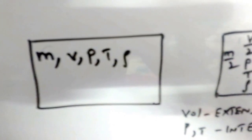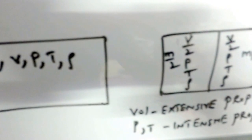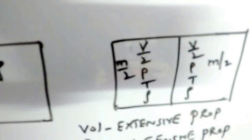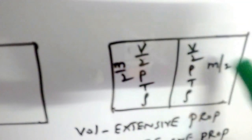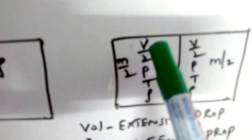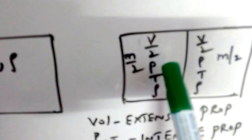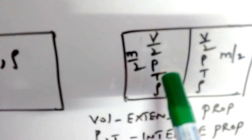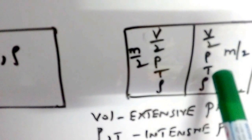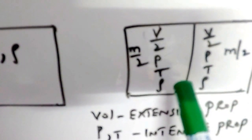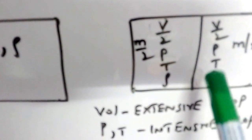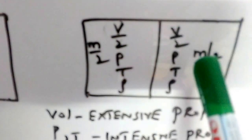After dividing with the intermediate wall, the mass in each half becomes M/2 and the volume becomes V/2. However, the pressure still remains constant as P, temperature also remains constant as T, and the density also remains constant as rho. Observing this, volume changed when the mass changed — volume is directly dependent on its mass.